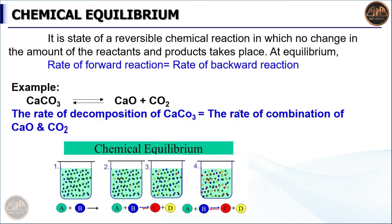Now let's look at the chemical equilibrium state. Chemical equilibrium is the state of a reversible chemical reaction in which no change in the amount of reactants and products takes place. The forward reaction rate is equal to the rate of the backward reaction, and the reaction appears to stop.